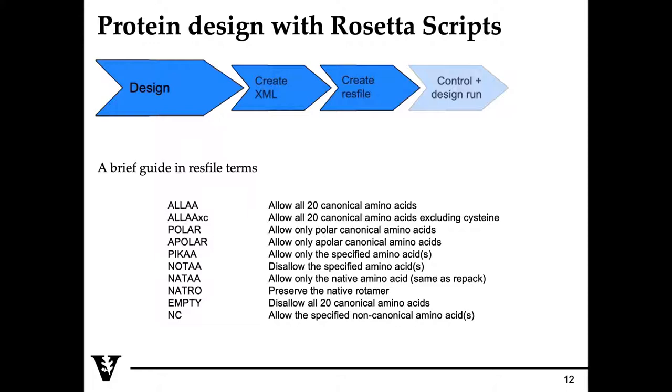The next thing to do is to create a res file. What a res file does is essentially tells Rosetta which amino acids in your input structure to act upon and in what way. Here's just a list of terms that you could pass.